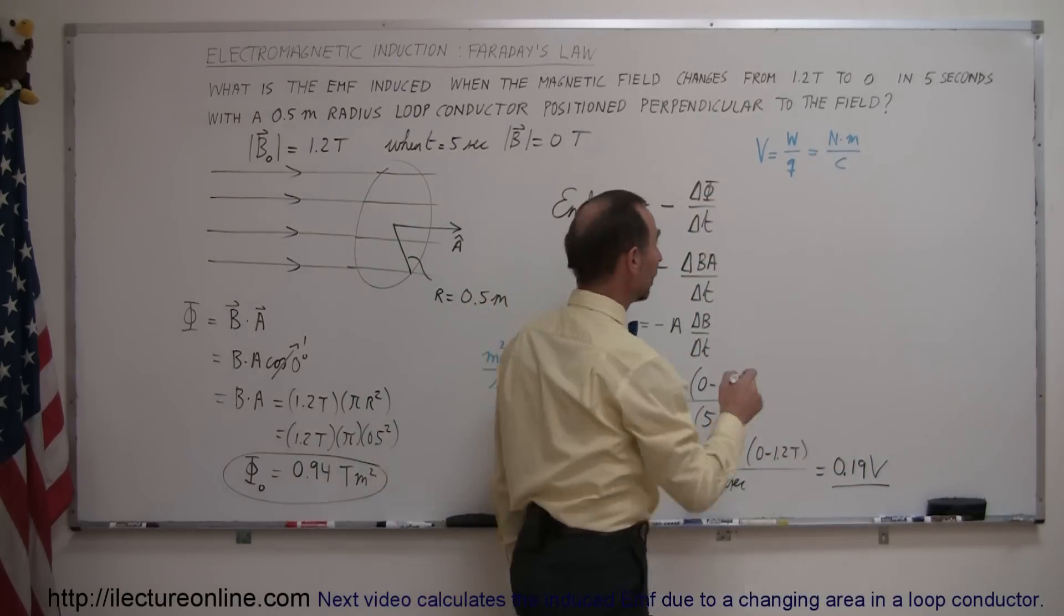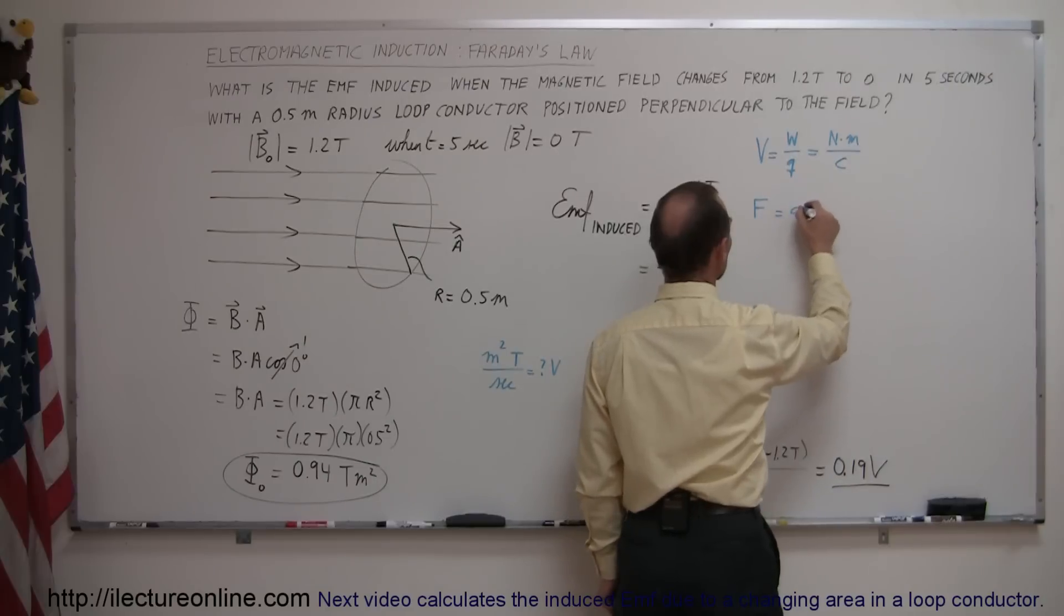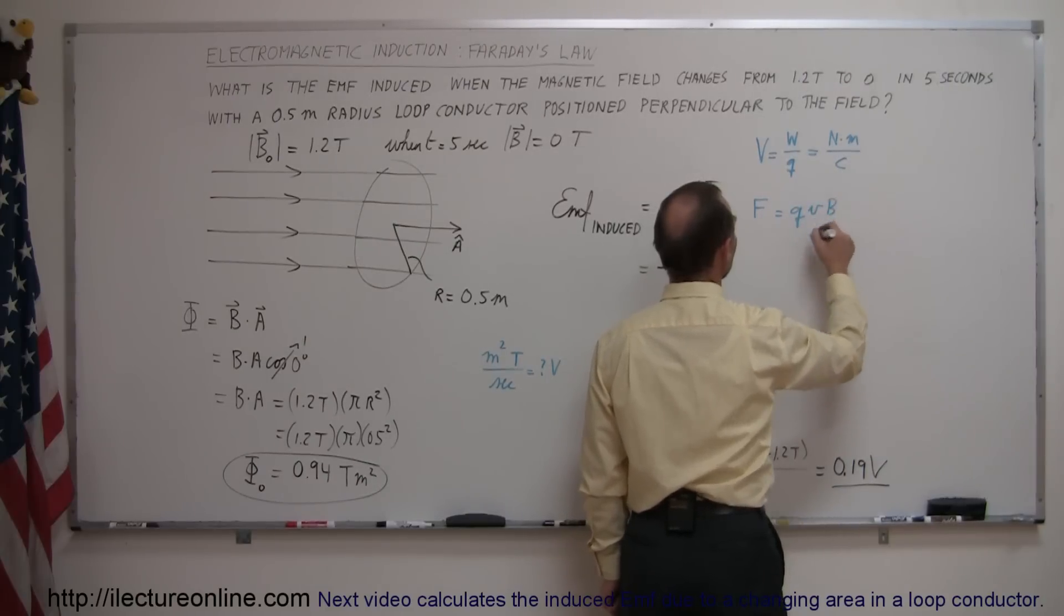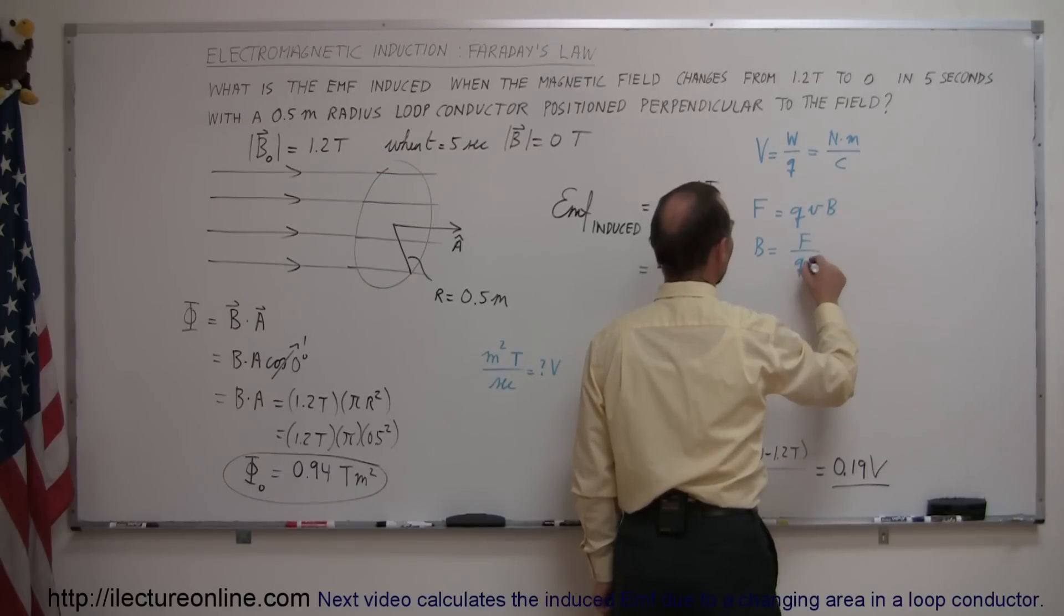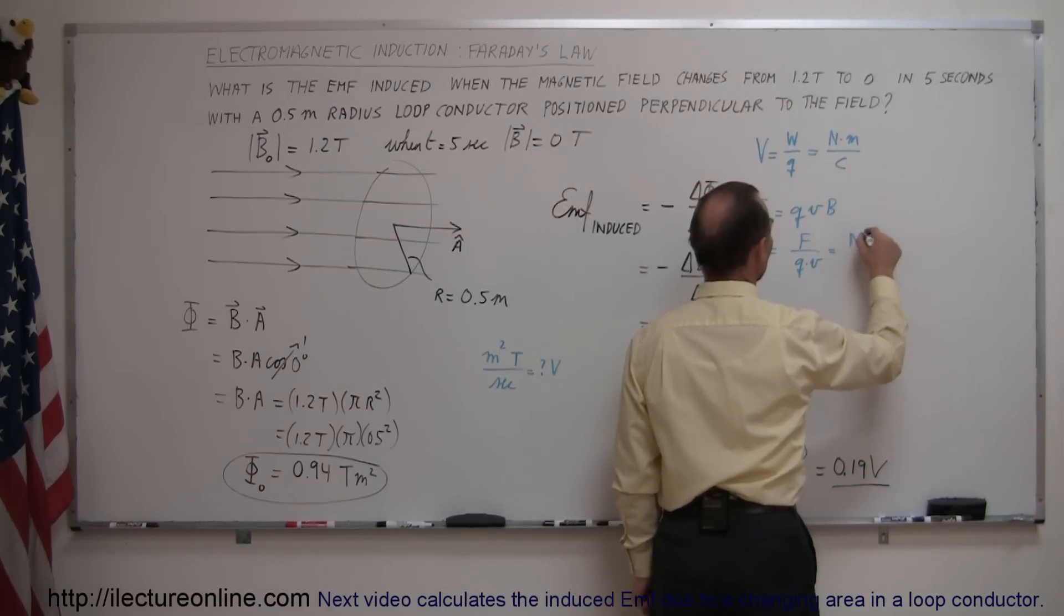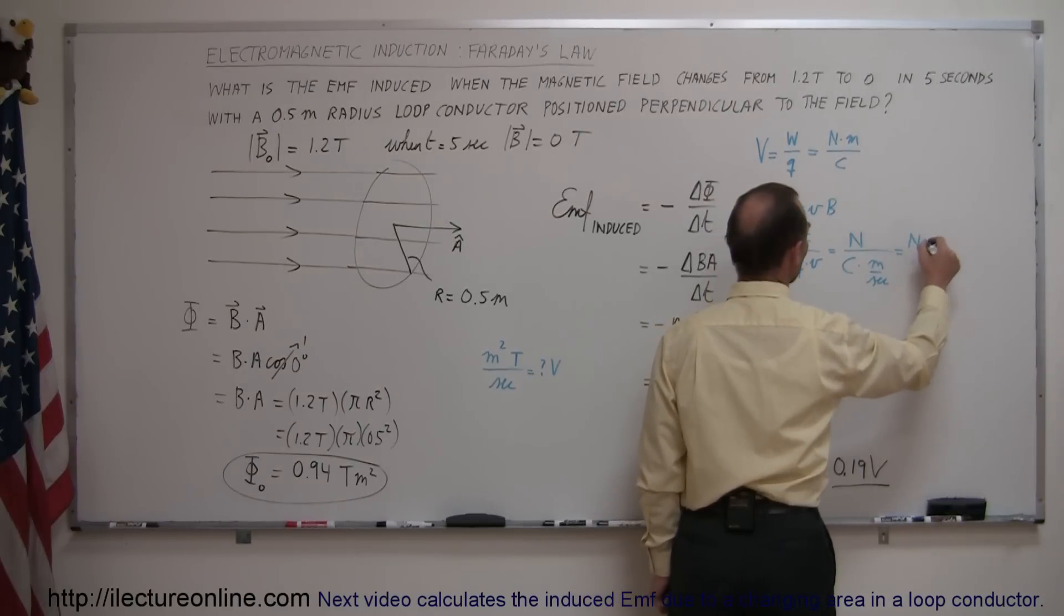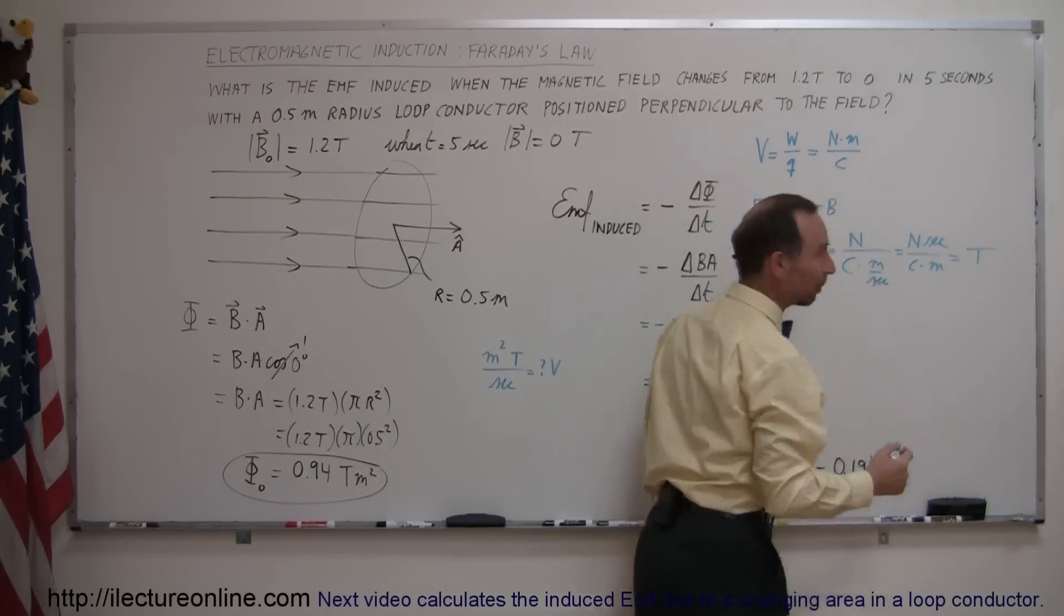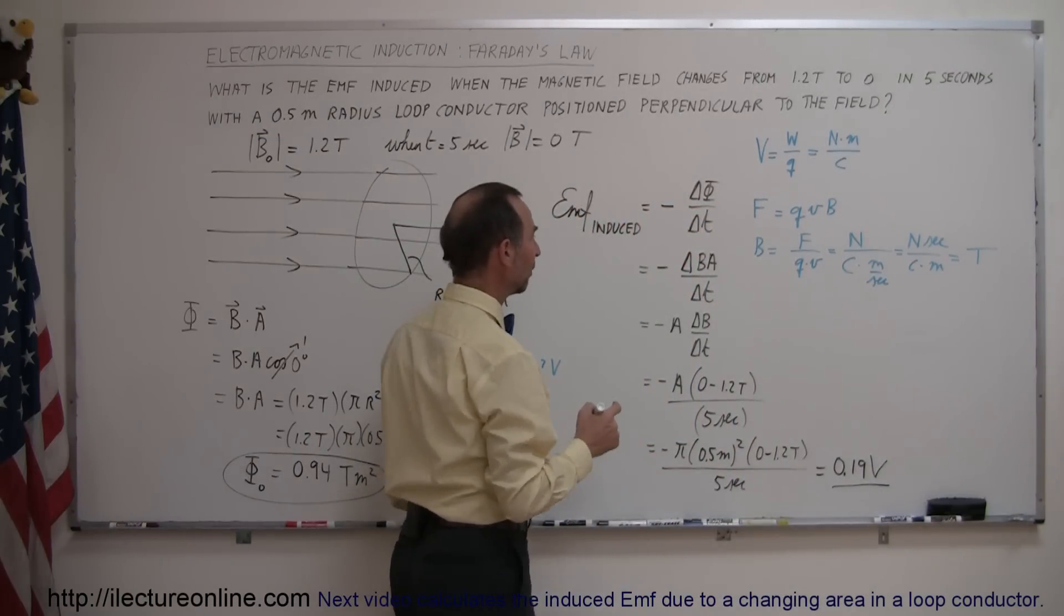And then we've also learned that the force on a charge moving through a magnetic field is equal to QVB, then we can say that therefore B is equal to the force divided by the charge times velocity, and if we put in the units for that, we can say that force is in newtons, charge is in coulombs, and velocity is in meters per second, which means we get newtons, seconds, divided by coulomb times meters,